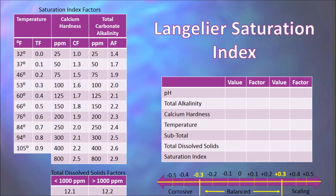Once we have these numbers from our actual water test, utilizing the charts, we can see that we have three different columns in the chart to our left: temperature, calcium hardness, and total carbonate alkalinity. The value is what you actually tested from your pool water sample. For every value, there is a corresponding factor.